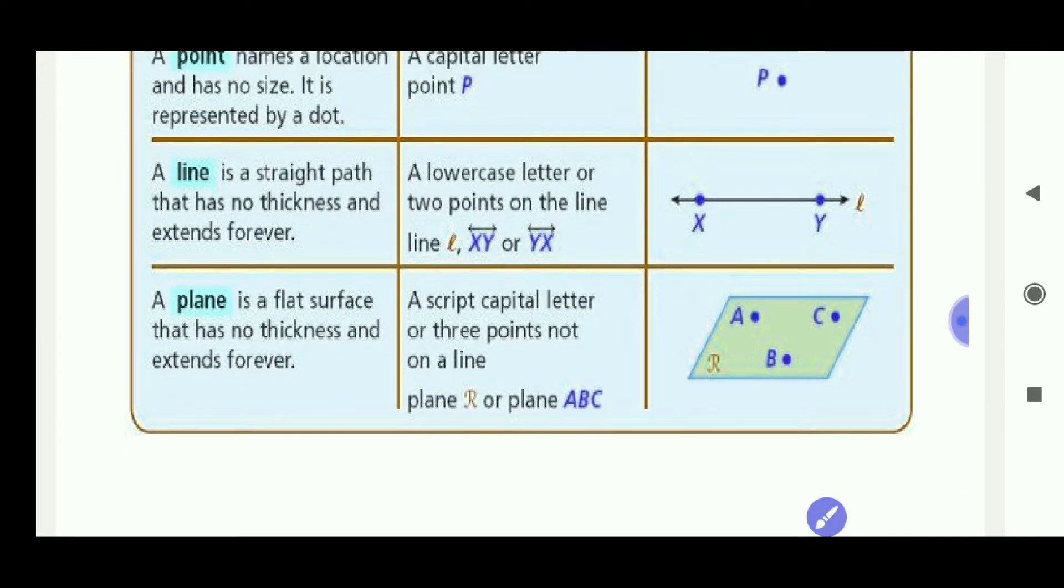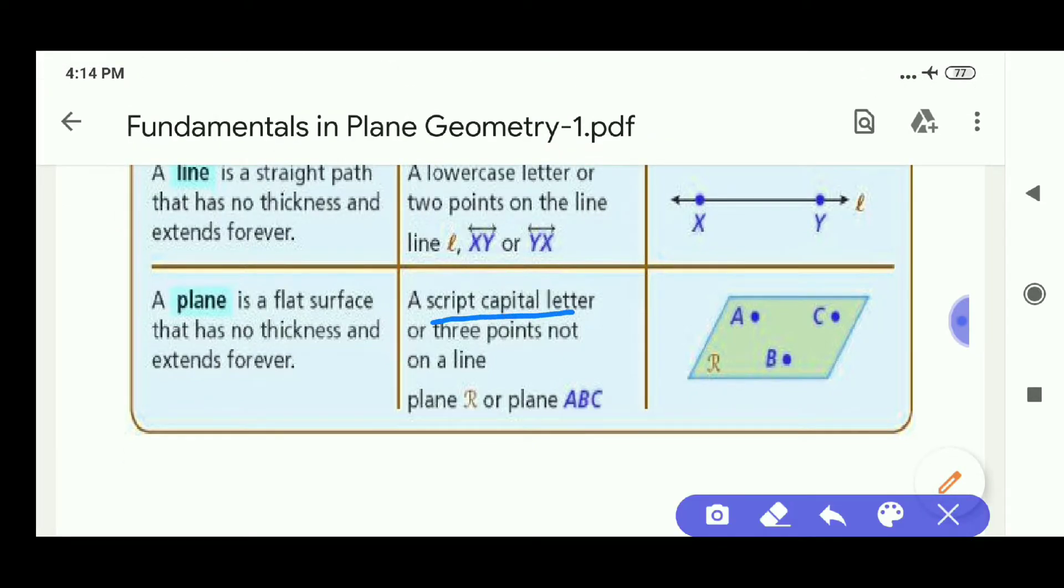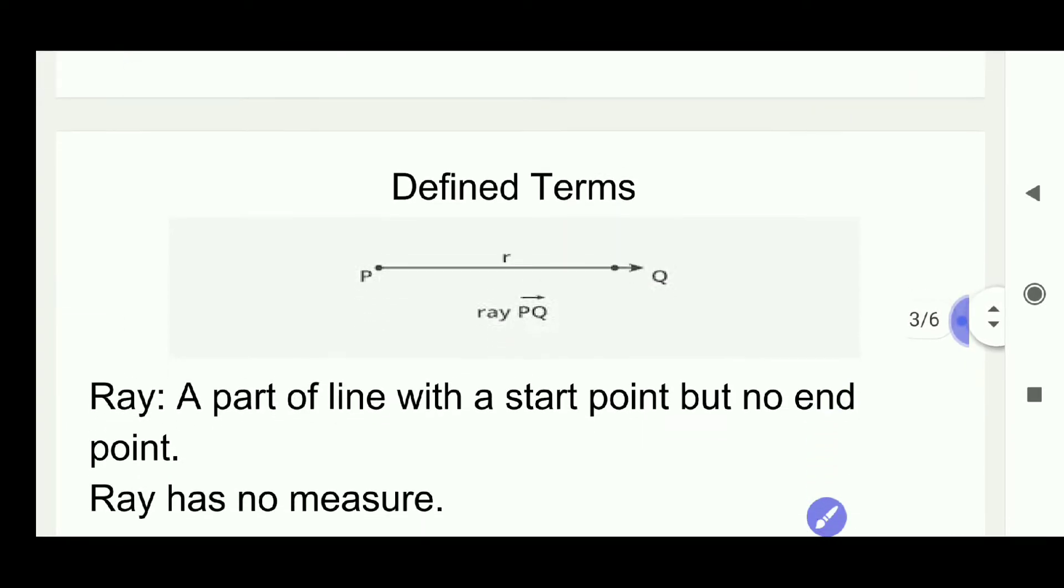A plane is a flat surface. It has no thickness and it can be extended forever. It is denoted with script capital letters like R and if it has three points on it, then it is denoted with A, B, C like this.